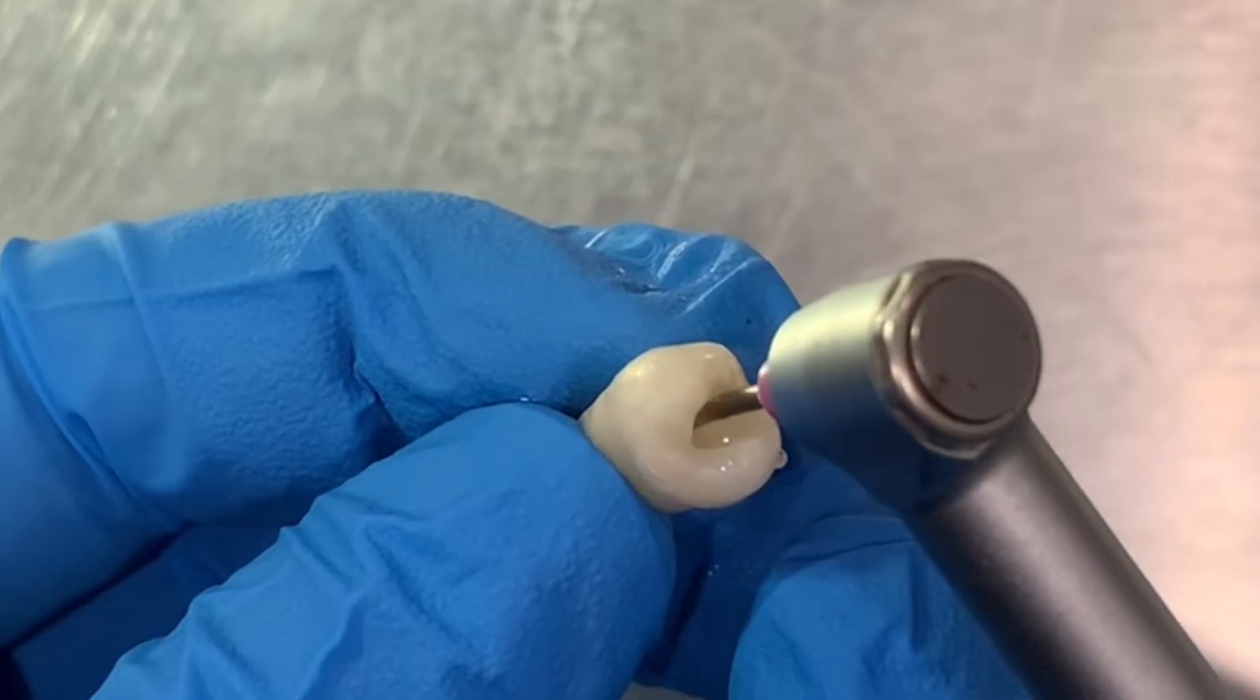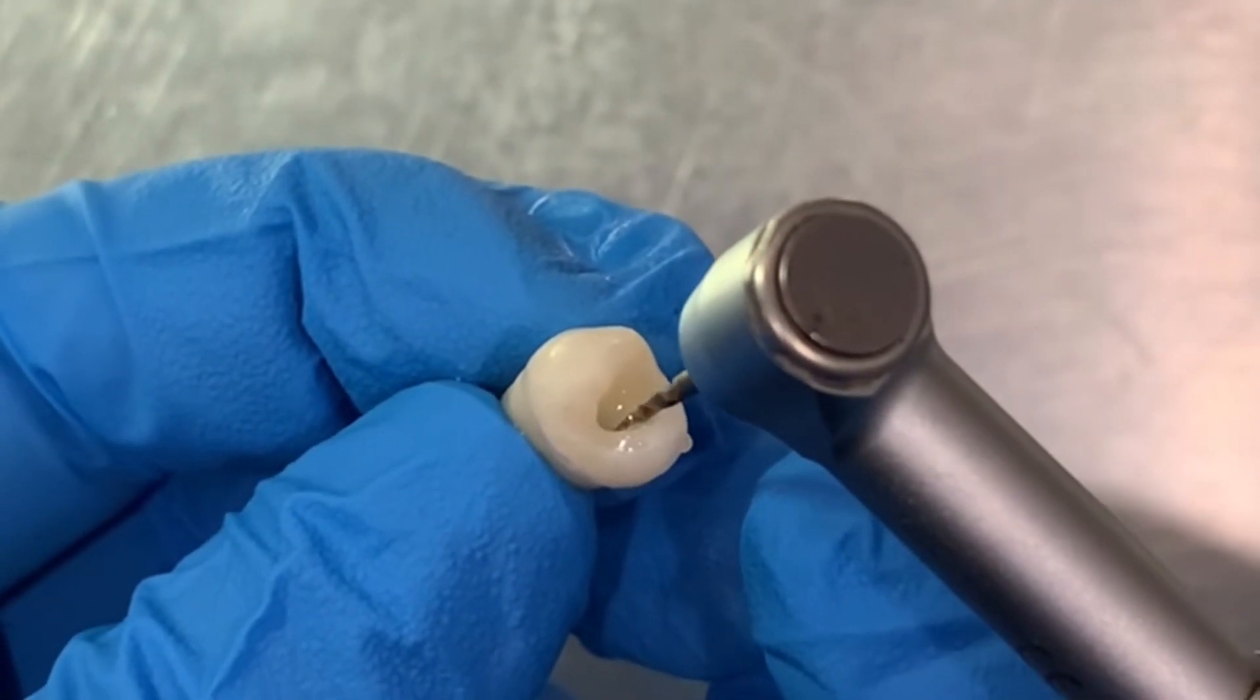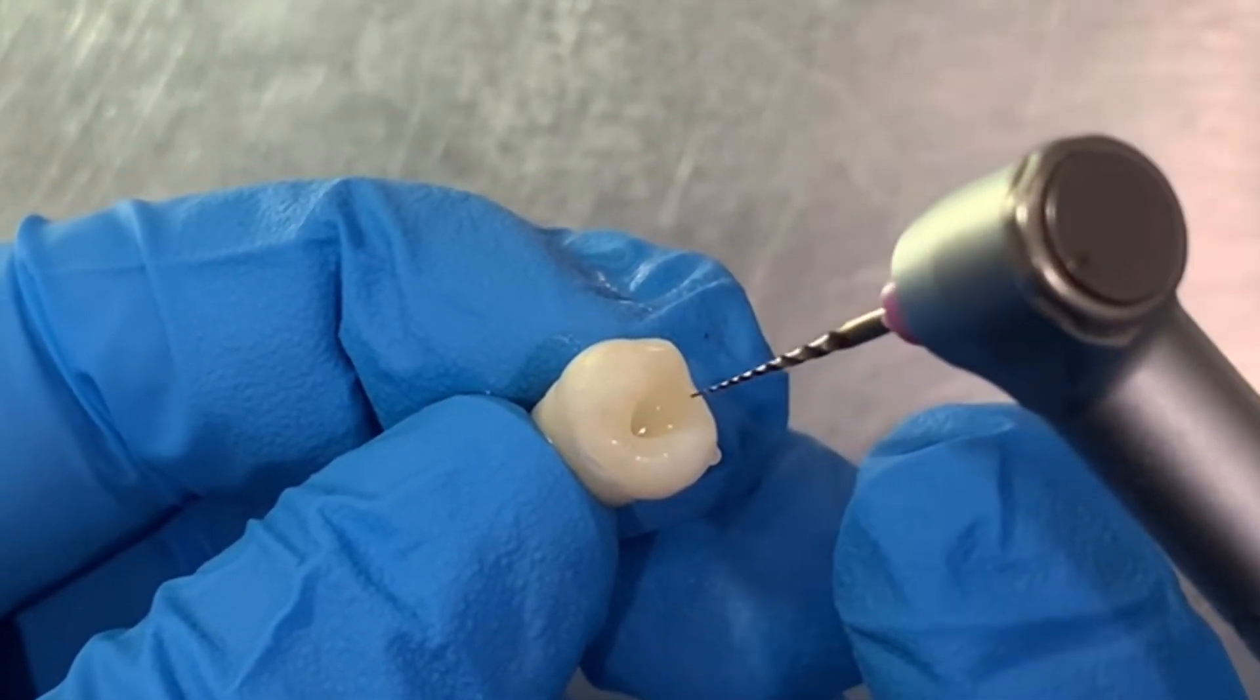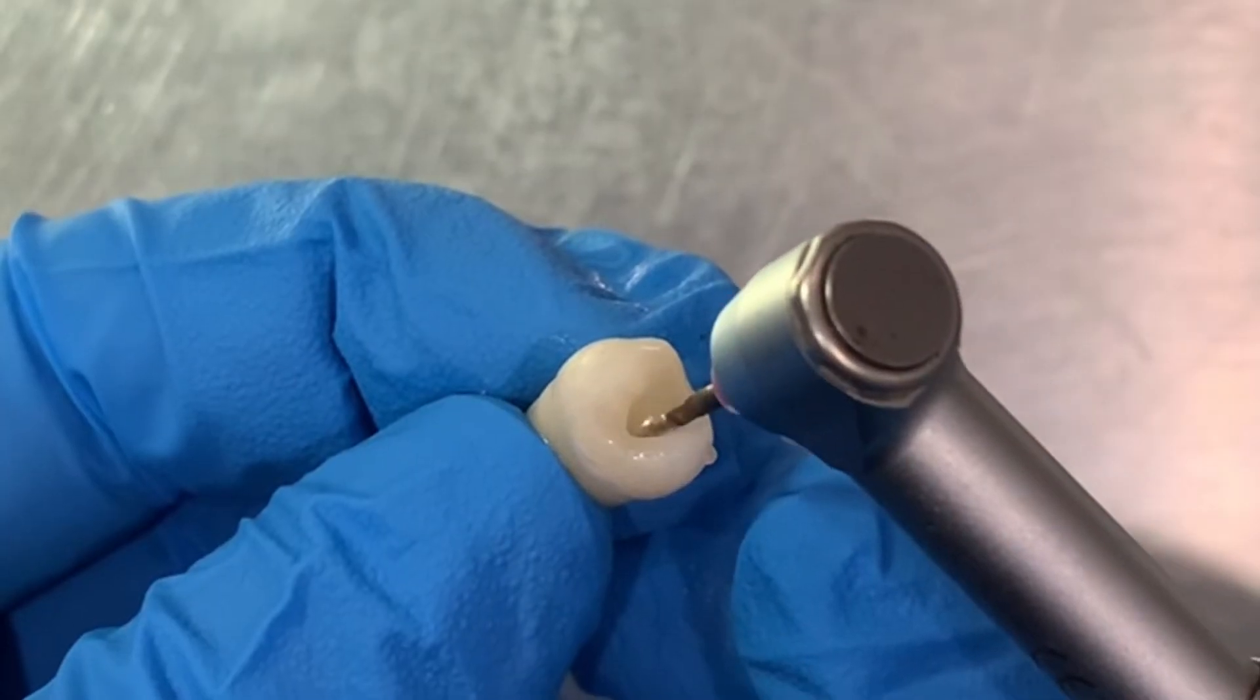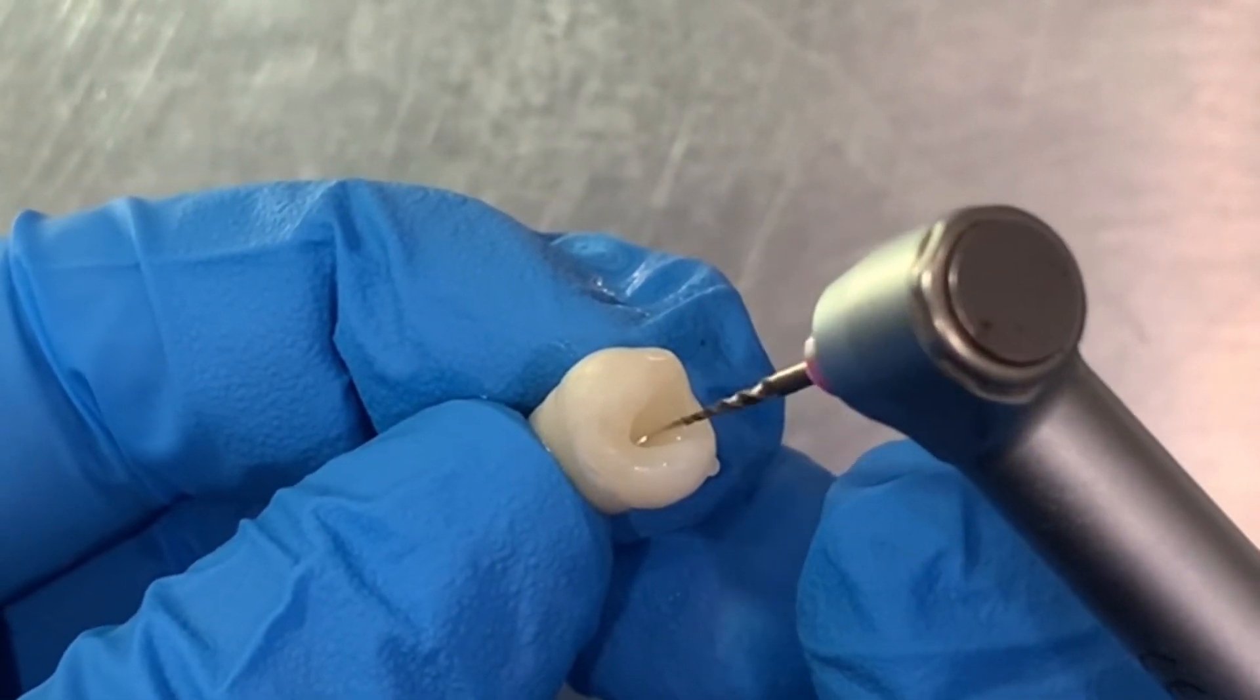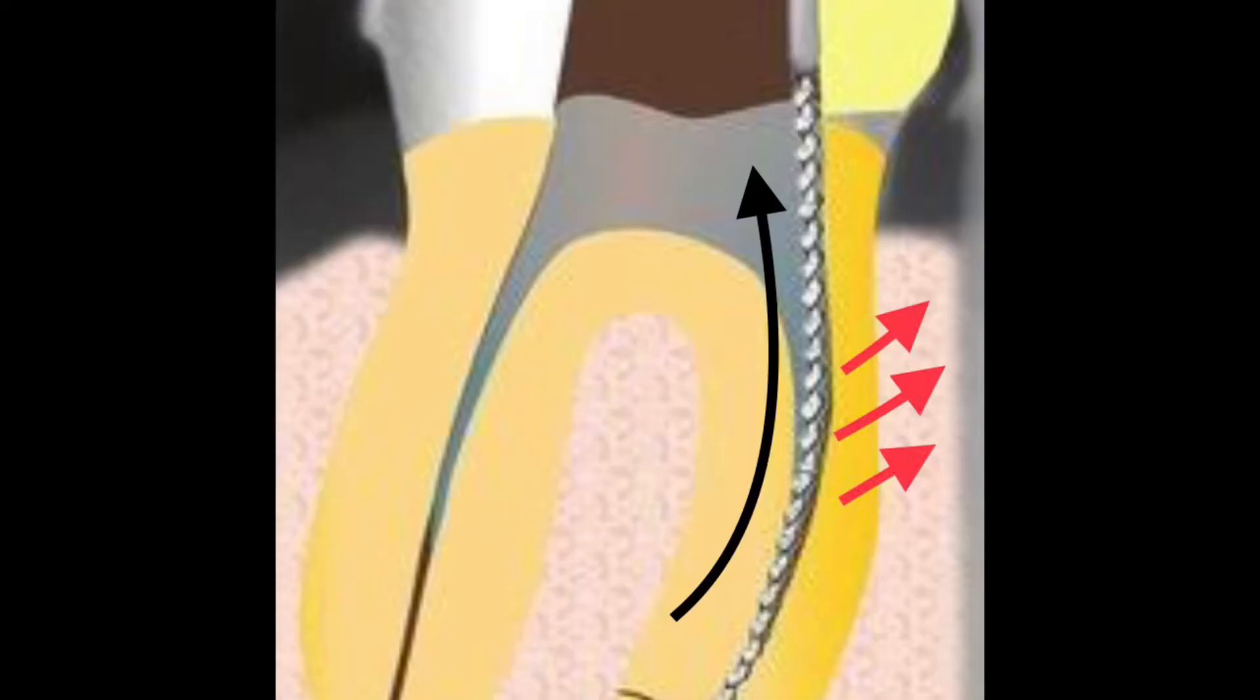The shaping files are used in a brush-like action. With this action you can see the cutting takes place when we pull out the file - it takes place laterally on the out stroke. As the file is pulled out, the cutting takes place laterally along the walls. This is called brushing action. We are brushing the files against the walls.